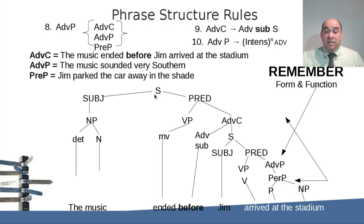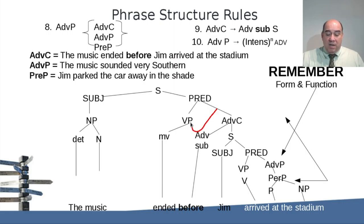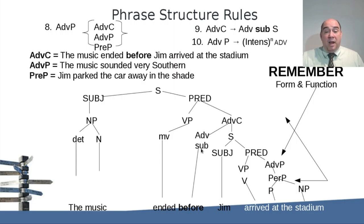Let's break this down. We've got a sentence that breaks down to subject and predicate. The subject is a noun phrase — 'the music' — determiner plus noun. Your predicate breaks down into a verb phrase and an adverb clause. The verb phrase has the main verb 'ended.' Off of the predicate we have an adverbial clause, beginning with the marker 'before.' Then off of the adverb clause we have a whole new sentence — sentence two — with its own subject and predicate.